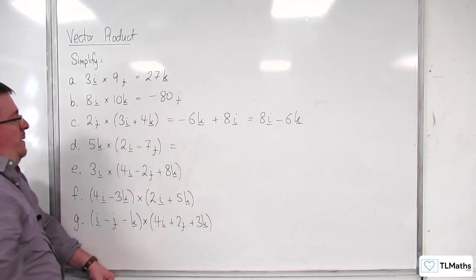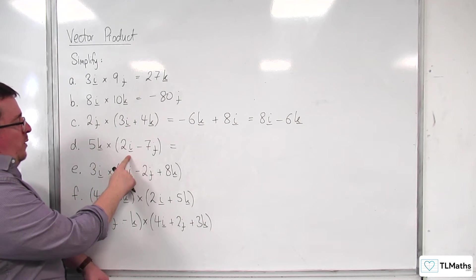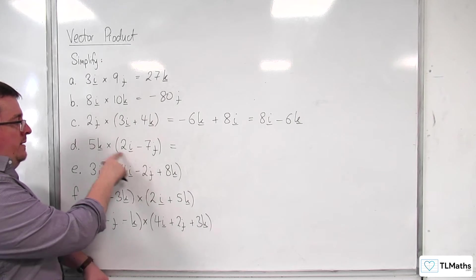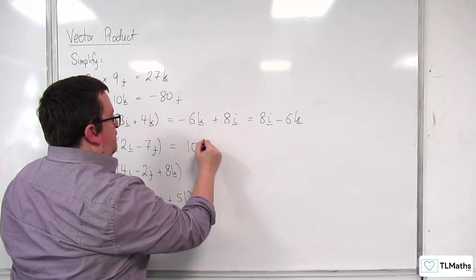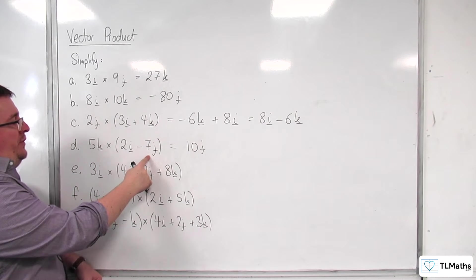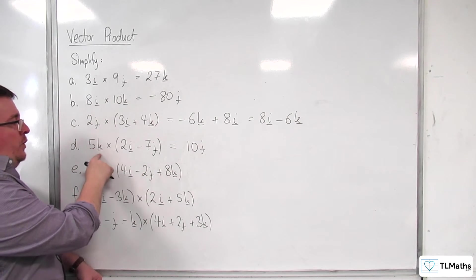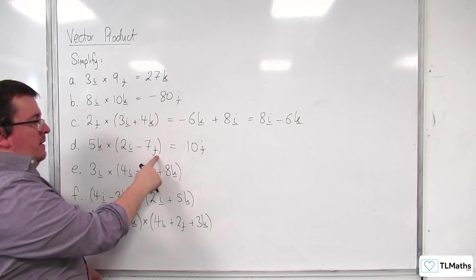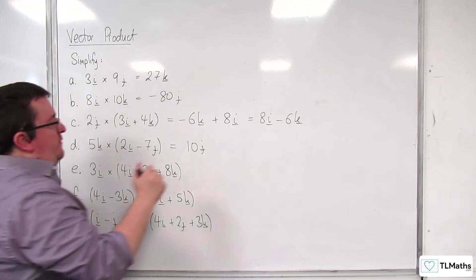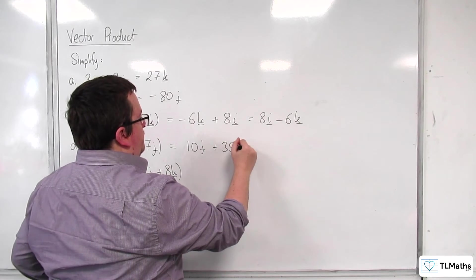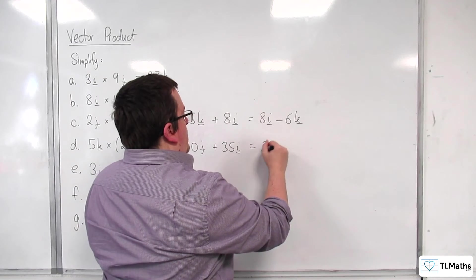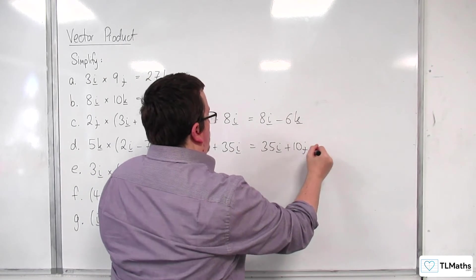Right. Let's try with this next one. So, 5k cross 2i. k cross i is j. So, we're going to get 10j there. And then we've got 5k cross minus 7j. So, k cross j is minus i. But we've got the minus there as well. So, it's going to be plus 35i. So, again, we would probably want to rewrite that. So, that's 35i plus 10j.